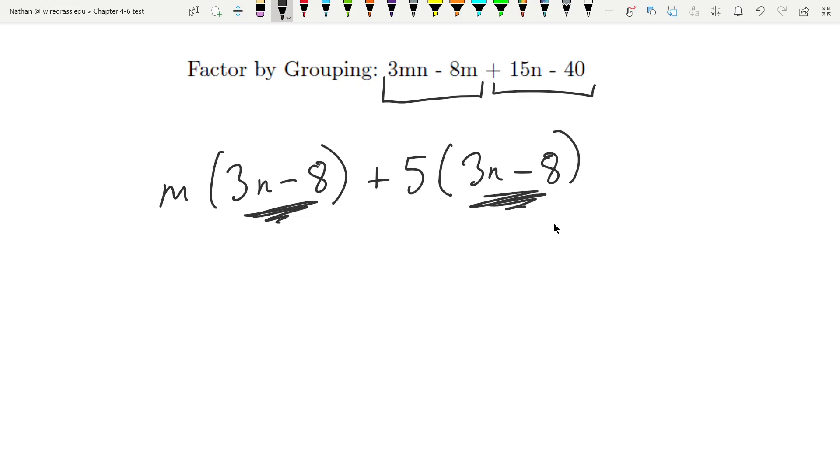So taking that out of both of these terms, I'm left with just an m and just a positive 5, and that's factored.